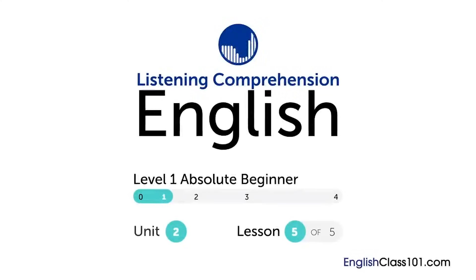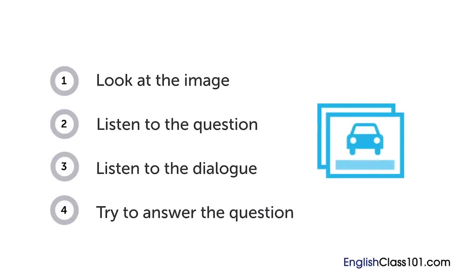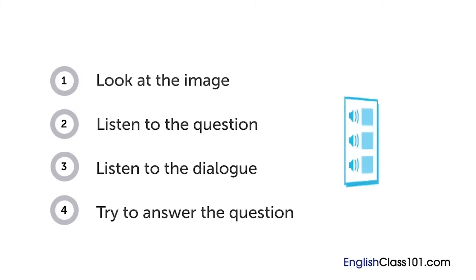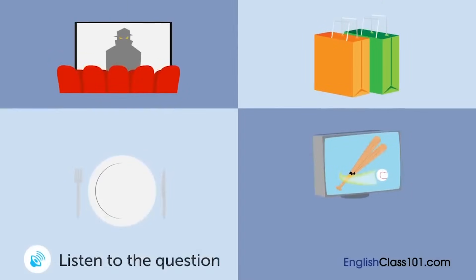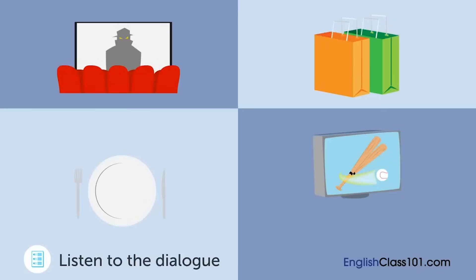How are your English listening skills? You'll see an image and hear a question, then a short dialogue. Listen carefully and see if you can answer correctly. A man and a woman are talking. What are they going to do first? — 'What do you want to do today?' 'I want to go see a movie.' 'Okay, I want to watch the baseball game on TV. Also, I want to go shopping.' 'The baseball game starts at one o'clock.' 'So let's see the movie first, and then you can watch the baseball game.' 'Then we'll go shopping in the evening.'